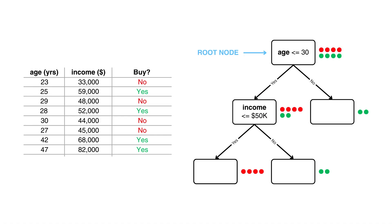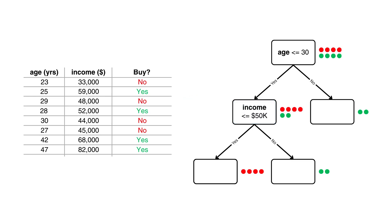The very top of the tree is known as the root node and represents the entire dataset. The first split happens here — in this case we ask if age is less than or equal to 30. If the answer is yes, we follow the left branch, and if the answer is no, we follow the right branch. Following the left branch we arrive at the next node, called a decision node, because just like the root node — which is simply the very first and most important decision node — it's a point in the tree where the data is split again based on a feature condition. In this case, is income less than or equal to 50,000? Depending on the answer, we follow either the left or the right branch until we eventually reach a leaf node. The leaf nodes are the endpoints of the tree. In our example, they're completely pure, meaning all the data points inside them belong to the same class, so there's no need to split any further.